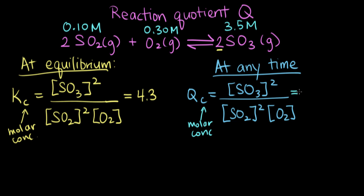So if we plug these numbers into our expression for Qc, we get 3.5 molar squared in the numerator, and 0.10 squared times 0.3 in the denominator. If I plug this into my calculator, I get that Qc with this set of concentrations is 4083.